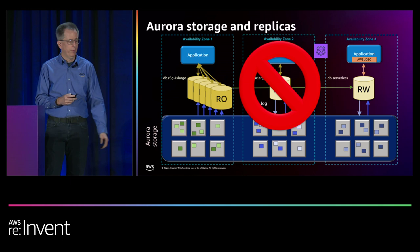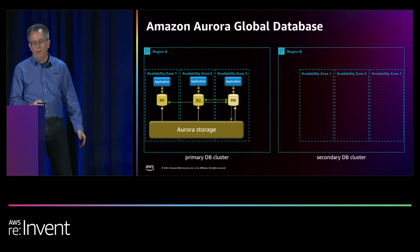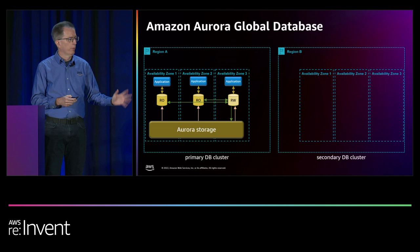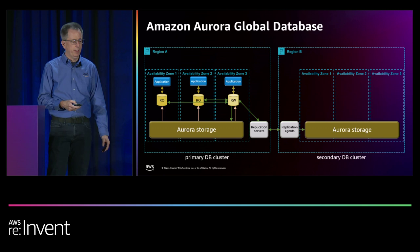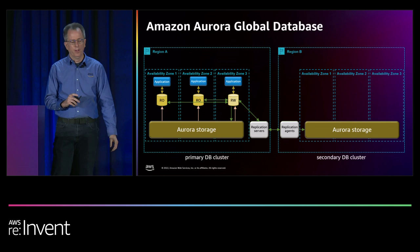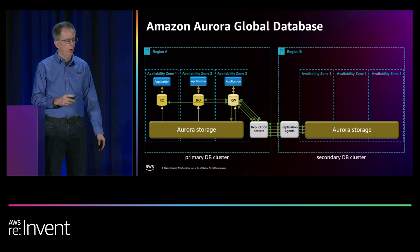That covers one cluster in one region. If you need multi-region, we have Global Database. Region A has a standard production primary cluster, and when you enable Global Database, you get storage for that cluster in Region B, plus new items called a replication server and a replication agent — these are behind the scenes. This is storage-based replication, which is subtly different from a lot of other replication approaches.